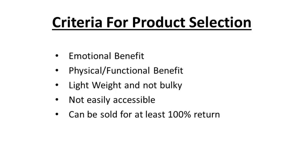The number one criteria for choosing a product to sell is that it has to provide an emotional benefit. Always sell products that solve real life problems — products that appeal to people's emotions. People base their buying decisions on emotions. No one buys a product out of logic; they make the decision emotionally and then back it up with logic. So your product should provide an emotional benefit or a physical/functional benefit.